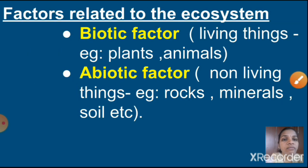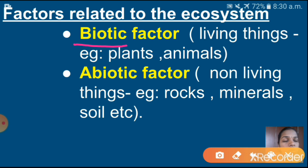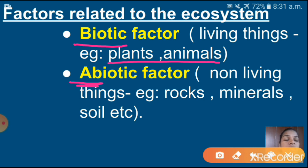What are the factors related to the ecosystem? There are two types of factors. First one is biotic factor and next one is abiotic factor. Bio means living things, so biotic factor includes living things — plants and animals. Abiotic factor means absence of living things, that means non-living things: rocks, minerals, soil, etc. These are the two factors related to the ecosystem.